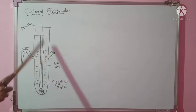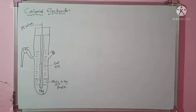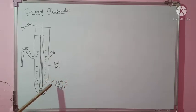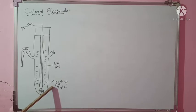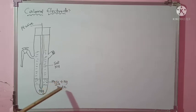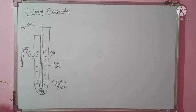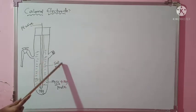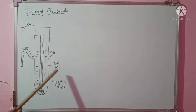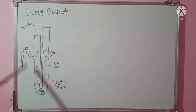The glass tube has a side tube, and the mercury at the bottom is covered by a paste. That paste is called mercurous chloride and Hg paste. This itself is called calomel — whatever paste is present there is called calomel, and that is why it is called the calomel electrode. You can see that a saturated solution of potassium chloride is introduced into the glass tube using the side tube.